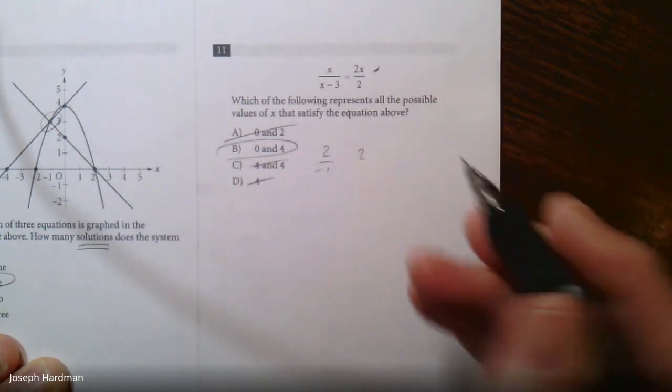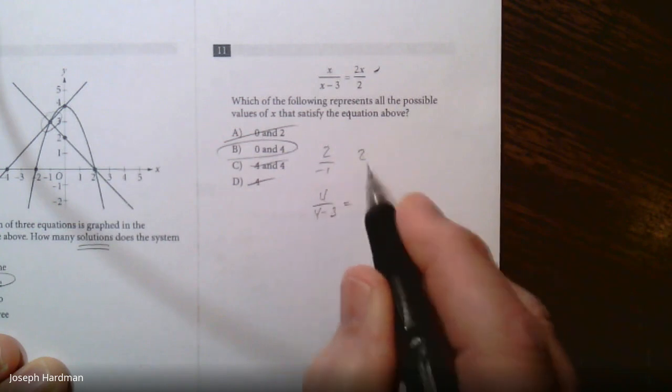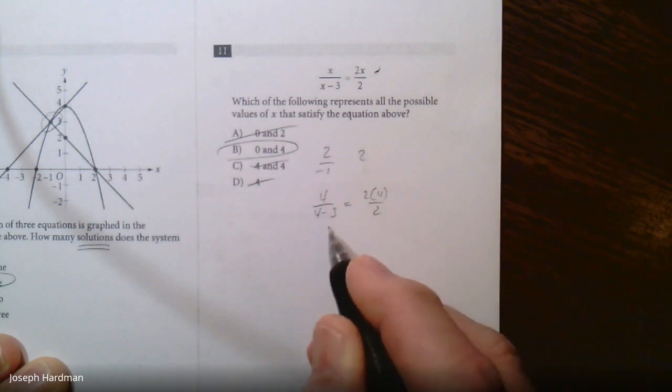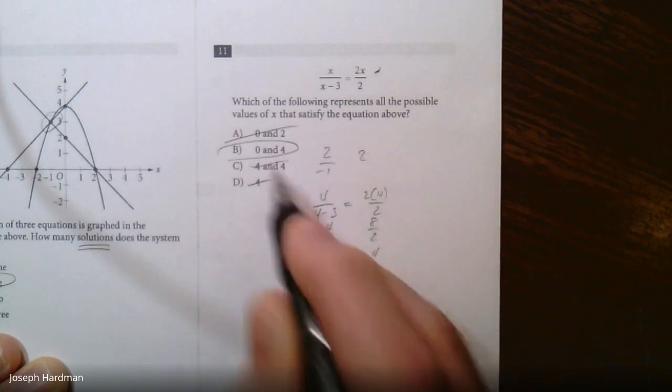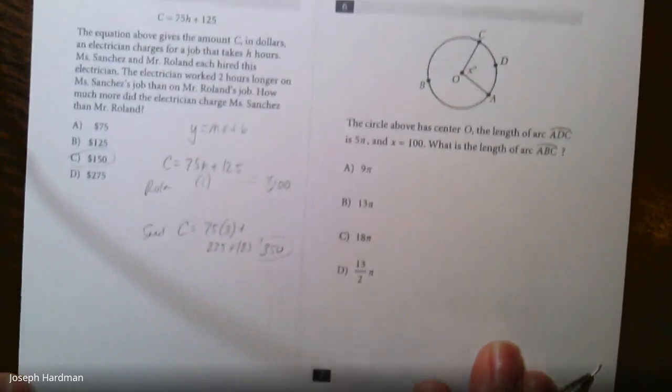So it's got to be this one. I just circled and go ahead, but if you want to check, put 4 in here. So you got 4 over 4 minus 3, and you got 2 times 4 over 2. 4 over this is 1, so 4 over 1, that's 4. 2 times 4 is 8, 8 divided by 2 is 4. So the correct answer is zero and four, letter B. All right, now I'm going to finish up here. I just want to go through this one.